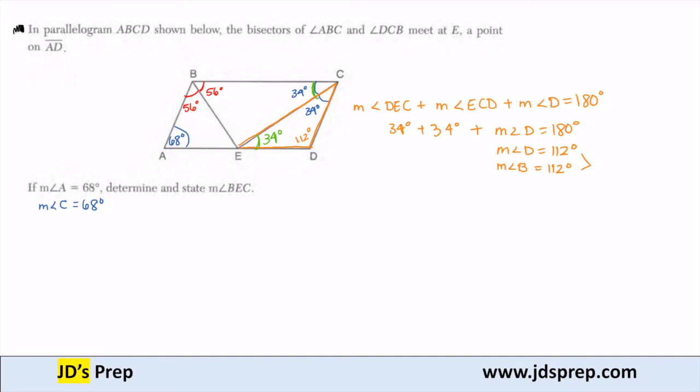So now we can find the piece that we need, angle BEC, because again, we have a triangle here. Let's look right here, here, here, and there. And I know the sum of the angles of my triangle has to be 180 degrees. So 56 degrees is what I know. I know 34 degrees in that triangle. And the measurement of angle BEC, which is what we're trying to find, has to add up to 180 degrees. Which means that angle BEC has to be 90 degrees.